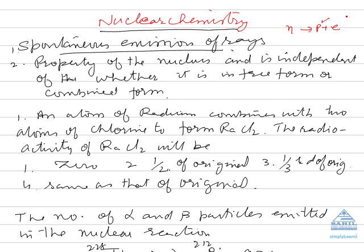When alpha rays are emitted, atomic mass decreases by 4 units and atomic number changes by 2 units. When a beta particle is emitted, there's no change in atomic mass but atomic number increases by 1 unit.